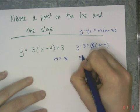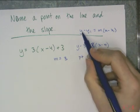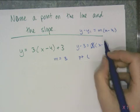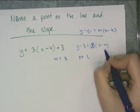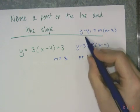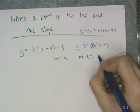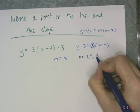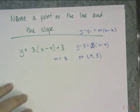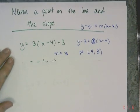And now I have to figure out the point on the line. And I follow this form. It's y minus y1, and x minus x1 is inside the parentheses. So x minus 4 is in the parentheses. That means the x value is 4. And y minus y1 is y minus 3. That means the y value is 3. And so the slope of the line is 3 and a point on the line is 4, 3. Now let's look at this next one.